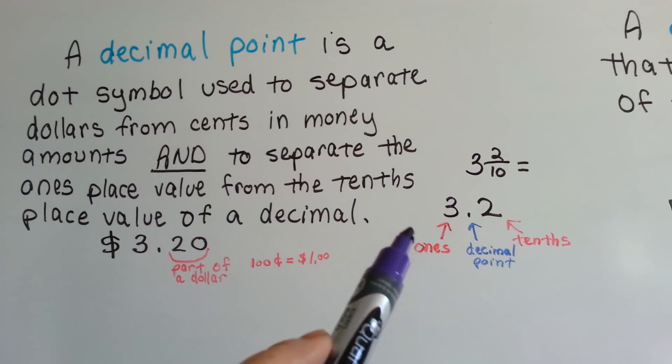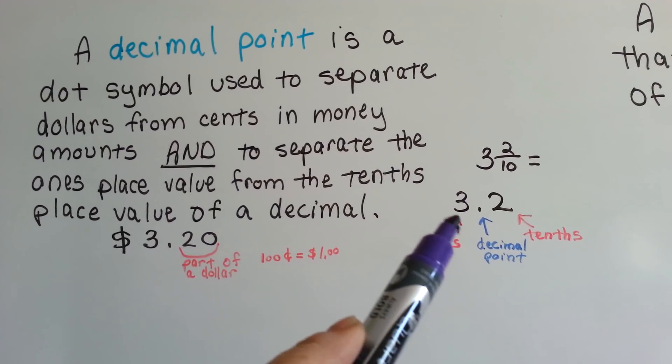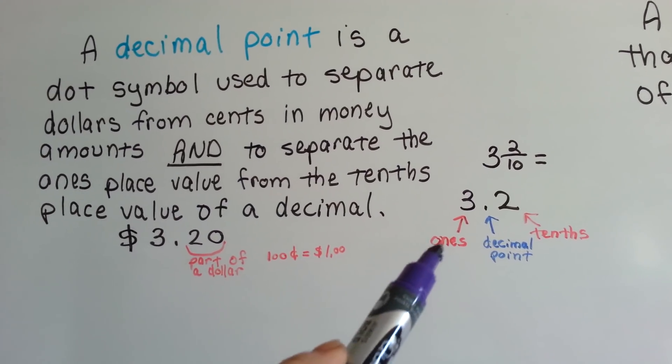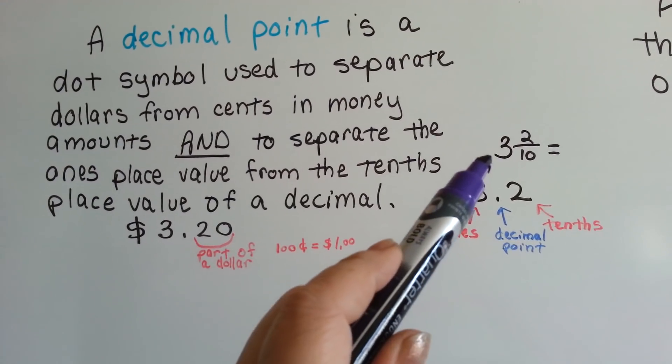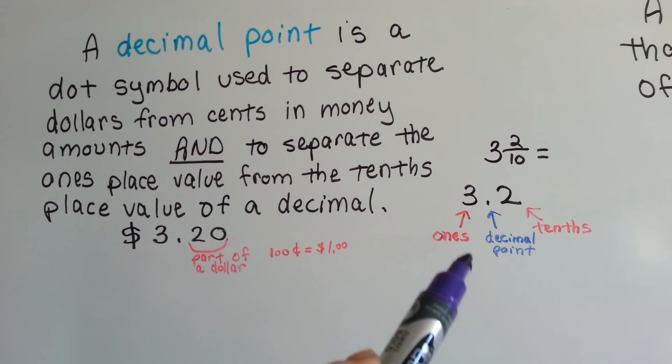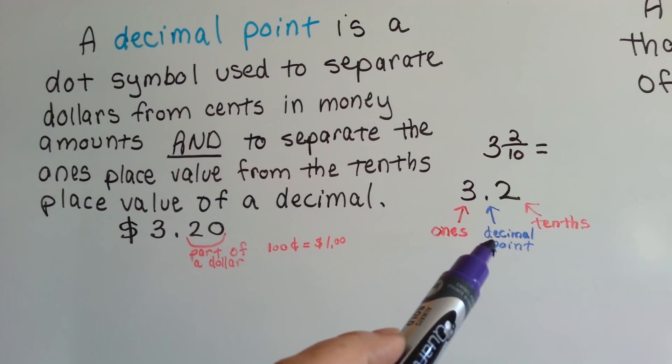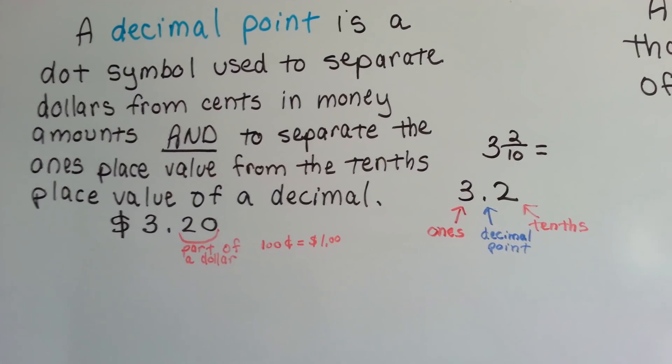3 and 2 tenths is written as 3 and 2 tenths as a decimal. Here's the ones place, just like that, 3 as a whole, 1. And then we have our decimal point, and then we have our tenths place.